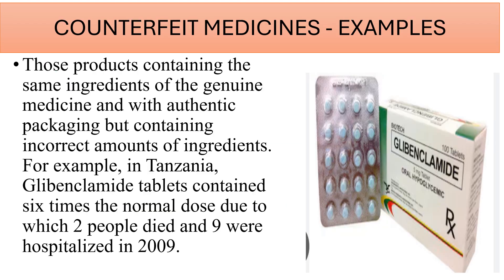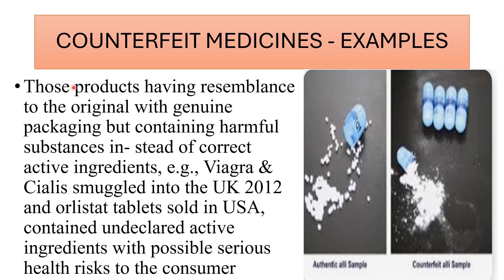Examples of counterfeit medicines: Some products contain the same ingredients as genuine medicine with authentic packaging but with an incorrect amount of the ingredient. For example, in Tanzania, Glibenclamide tablets contained six times the normal dose, due to which two people died and nine were hospitalized in 2009. Other products resemble the original with genuine packaging but contain harmful substances instead of the correct active ingredient. For example, Viagra and Cialis were smuggled into the UK in 2012, and certain tablets sold in the USA contained undeclared active ingredients with possible serious health risks to the consumer.